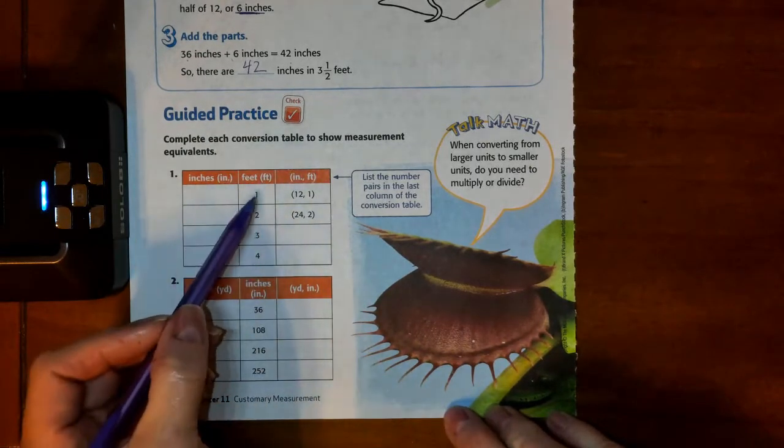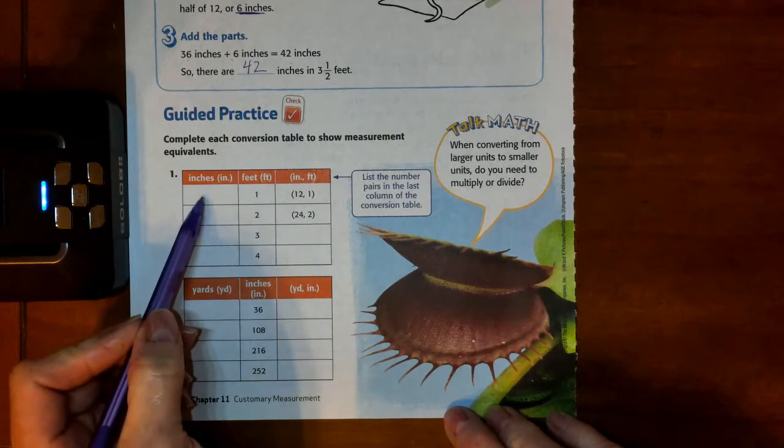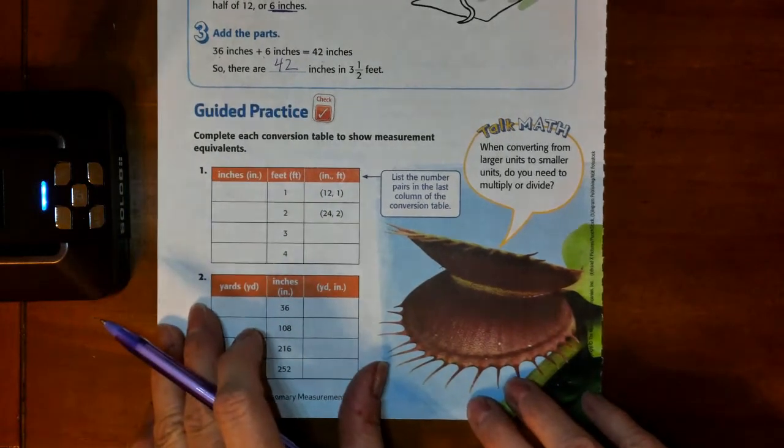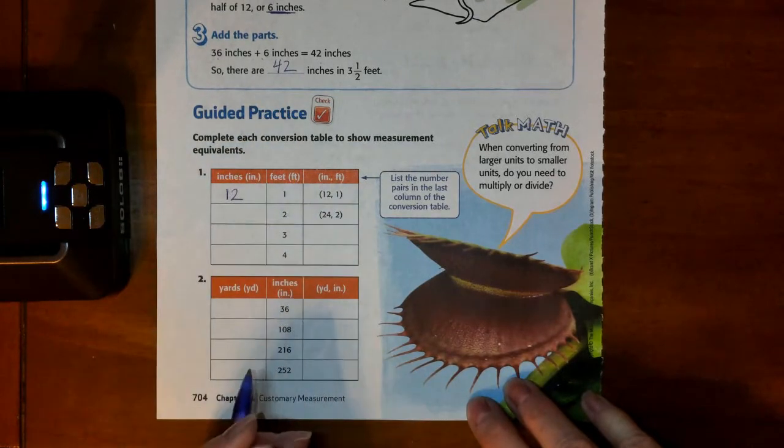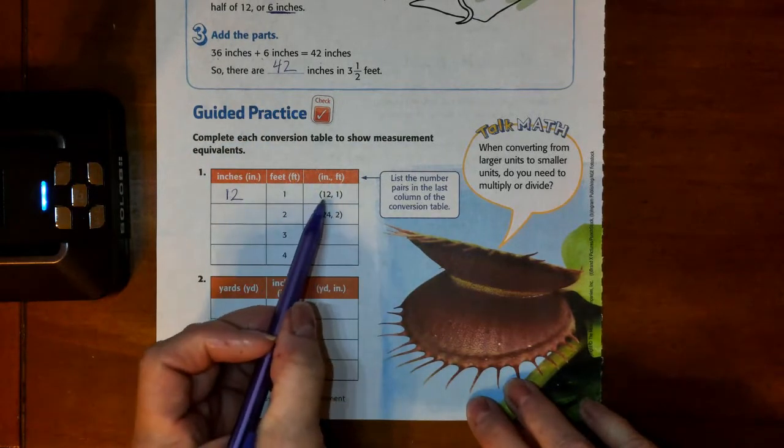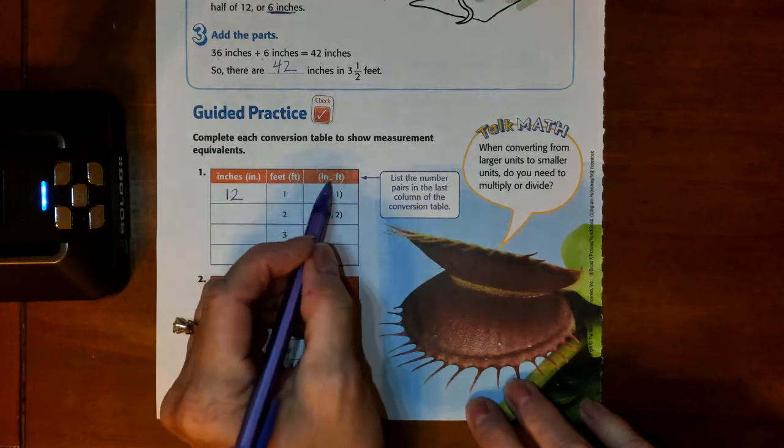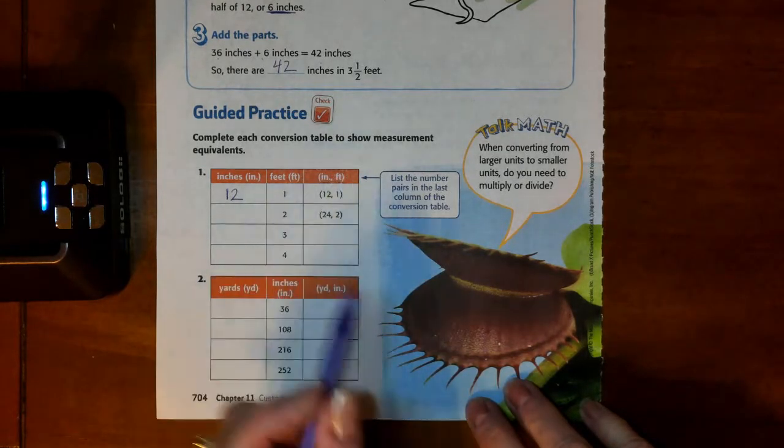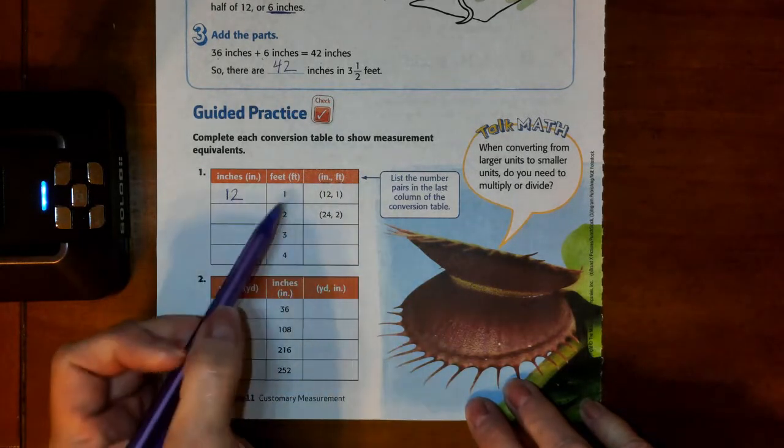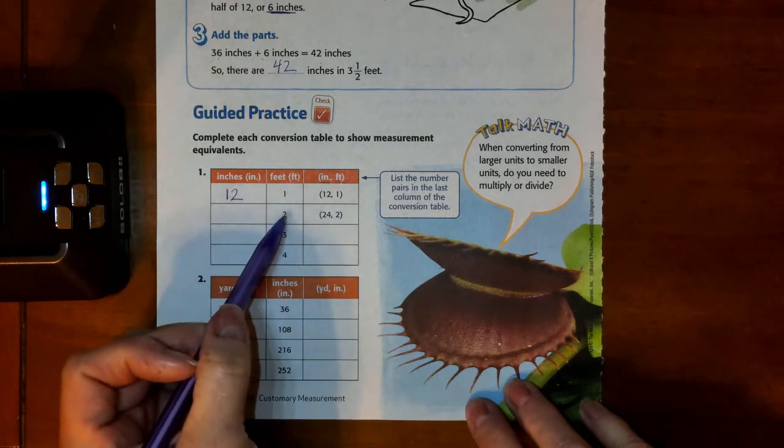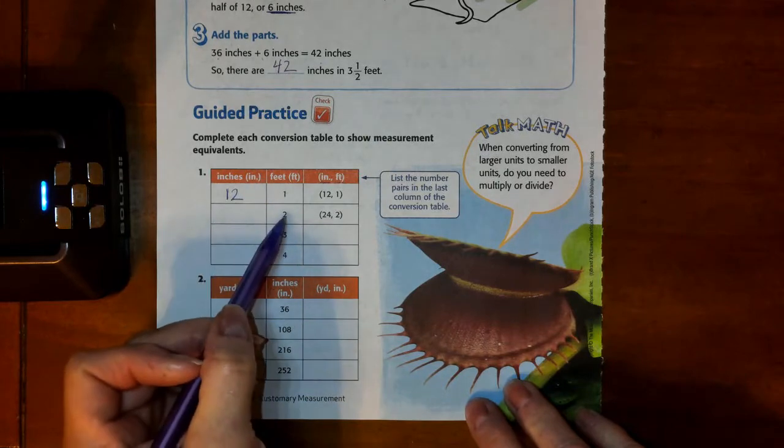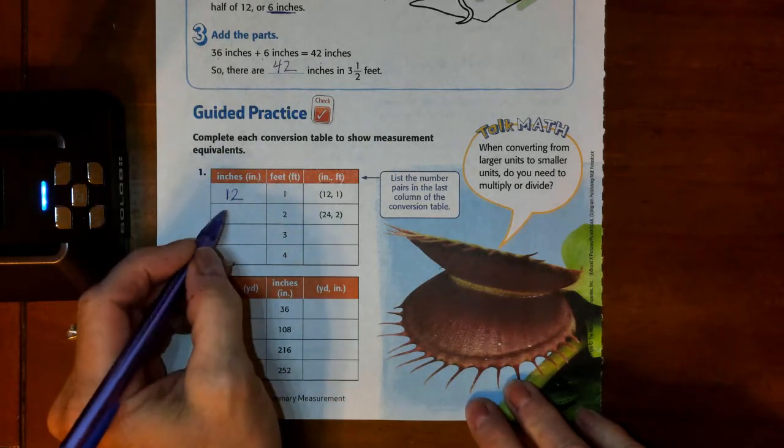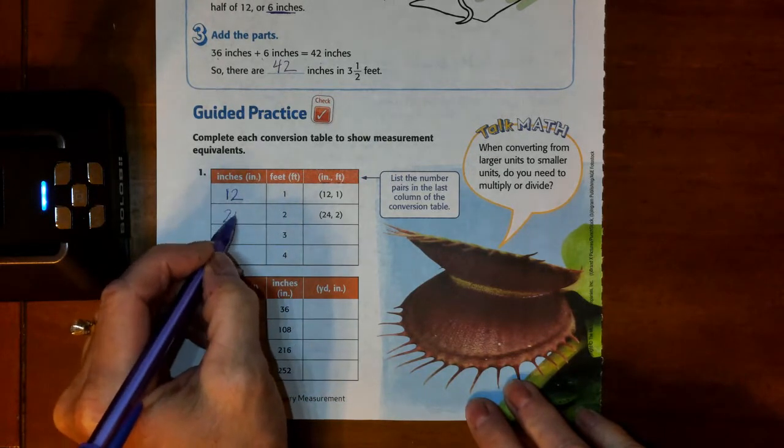If we have 1 foot, how many inches is that? Hopefully, you guys are listening to me and you're saying 12. So we record 12. And then over here in this column, they want you to list them in order in inches and then in feet. In this row, we have 2 feet. Well, if 1 foot is 12 inches, then 2 feet is 24.